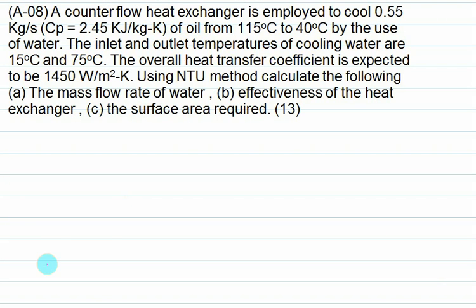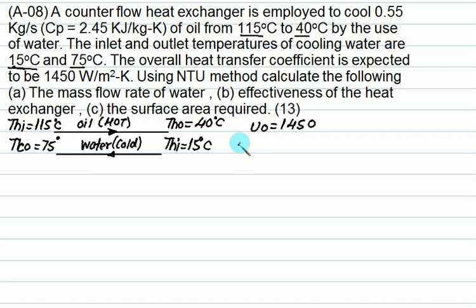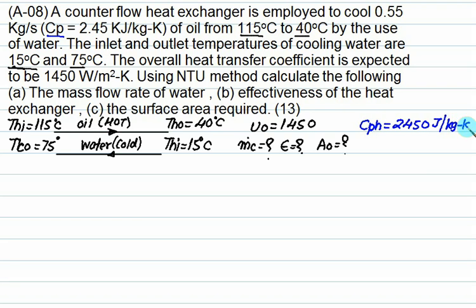Next question: a counter flow heat exchanger cools oil at 2.5 kg per second from 115 to 40 degrees Celsius using water. Water inlet temperature is 15 degrees Celsius and outlet is 75 degrees Celsius. Oil is the hot fluid with Thi equals 115, Tho equals 40. We need to calculate mass flow rate of cold fluid, effectiveness of the heat exchanger, and the surface area required. Cph of oil is 2450 J per kg per K; Cpc of water is 4200 J per kg per K.